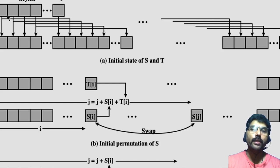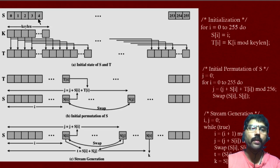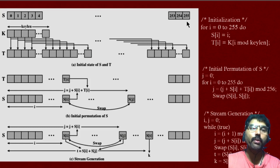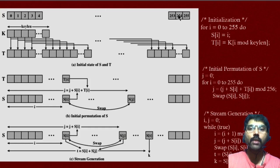The first part is called initialization of S. We have a state vector of size 256 bytes, initially set with values ranging from 0 to 255: S[0] is initialized to 0, S[1] to 1, S[2] to 2, and so on in ascending order up to 255.